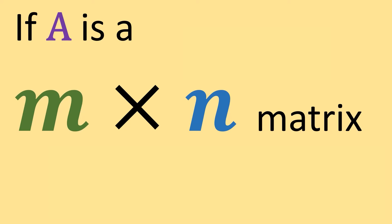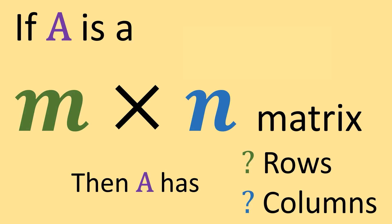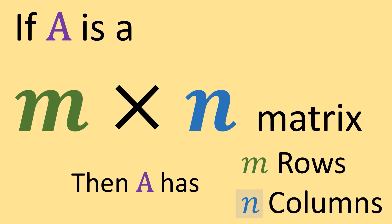If A is an M by N matrix, then A has how many rows and how many columns? The M in M by N is how many rows we have, and the N is how many columns we have.